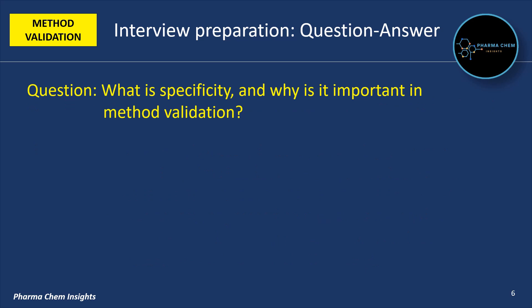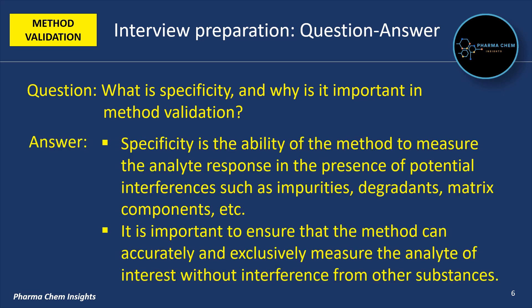Next question: what is specificity and why is it important in method validation? Specificity is the ability of the method to measure the analyte response in the presence of potential interferences such as impurities, degradants, matrix components, etc. It is important to ensure that the method can accurately and exclusively measure the analyte of interest without interference from other substances.